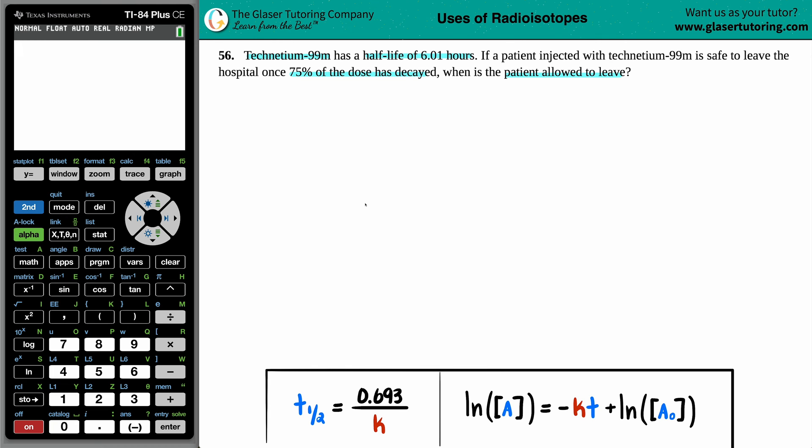So this patient, whoever came in, was injected with technetium-99M, maybe for a bone scan, brain scan, heart scan, liver scan, kidney scan, white blood cells. They could scan for anything. It's probably going to be technetium-99M, but they got injected, now they want to go home. When can that patient leave the hospital? Well, it can leave the hospital once 75% of the dose has decayed.